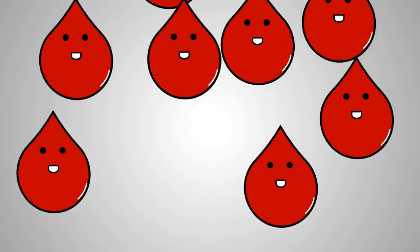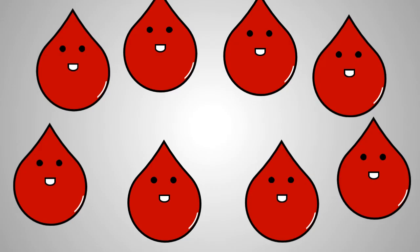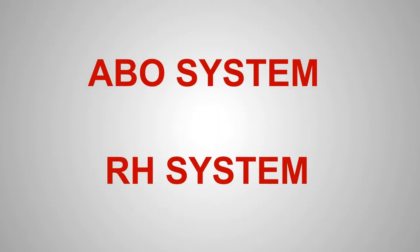Even though at first sight blood looks the same in all people, when analyzed it is very different. There are currently two main blood group systems used in medical practice – the ABO system and RH system.